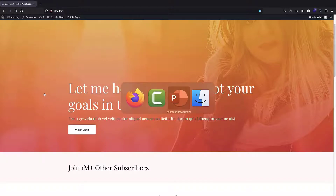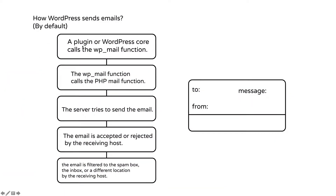Here I have a quick slide, and I'm going to explain how WordPress sends emails. This is the default route. Whenever you install WordPress, WooCommerce, any kind of plugin, or any kind of contact form, this is the standard way WordPress sends email. The first step is that a plugin or the WordPress core itself calls the WP Mail function, which is the default standard function for sending emails by WordPress.